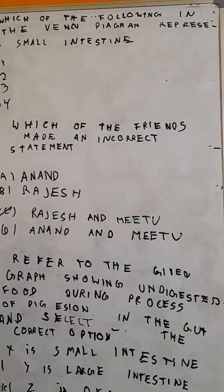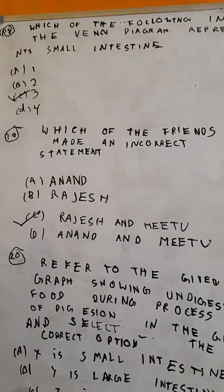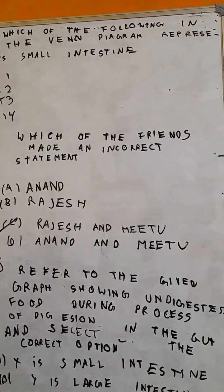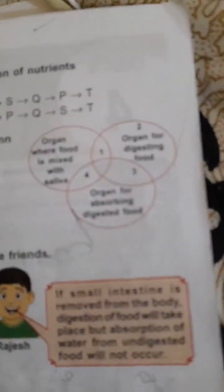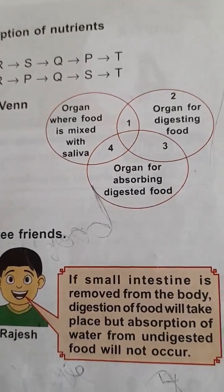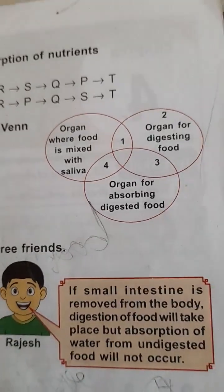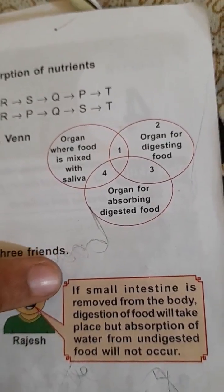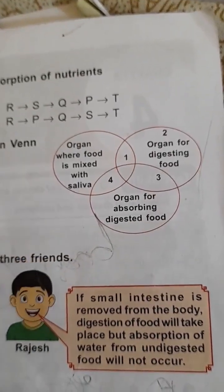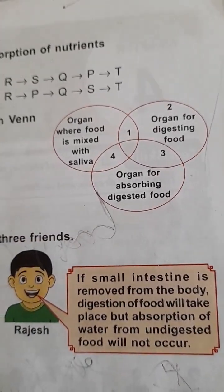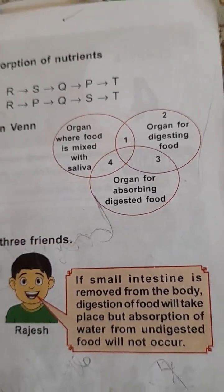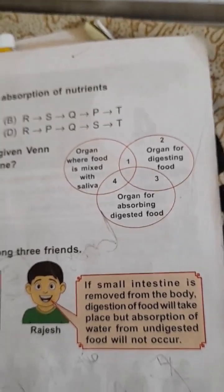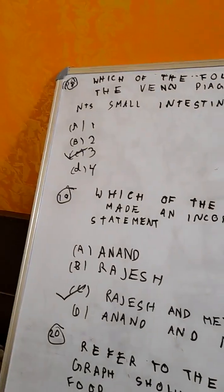Which part in the given diagram represents the small intestine? The small intestine is the organ for digesting food and absorbing digested food. So it's three. The correct option is option C, three.